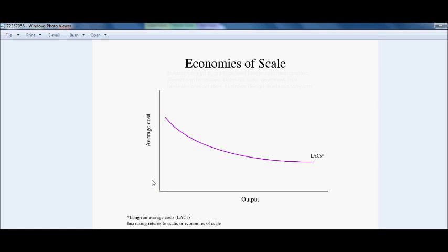The graph is often referred to as economies of scale and shows the trend between output on the x-axis and average cost per unit. The higher the output along the x-axis, the lower the average cost.